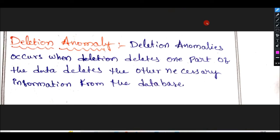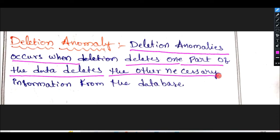Deletion Anomaly: Deletion Anomaly occurs when deletion deletes one part of the data and also deletes the other necessary information from the database.